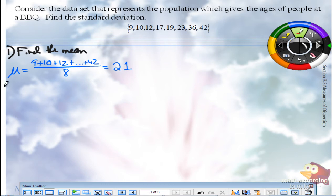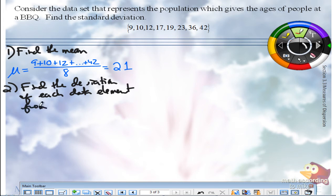Step two, find the deviation of each data element from the mean. In one word, that means subtract. So you're going to take each data element, 9 up to 42, and you're going to subtract 21.